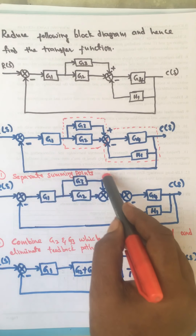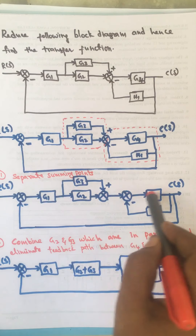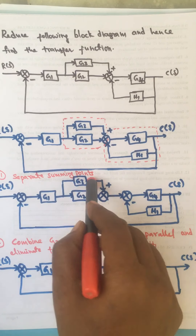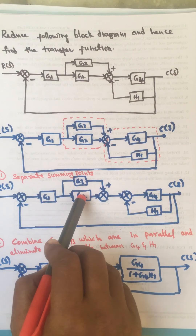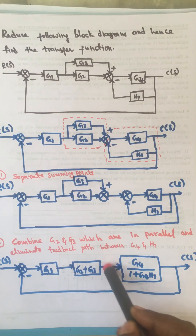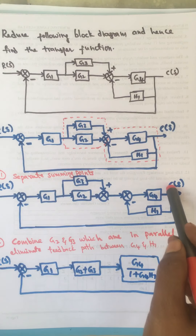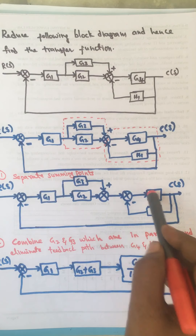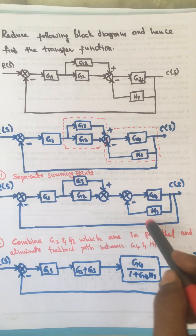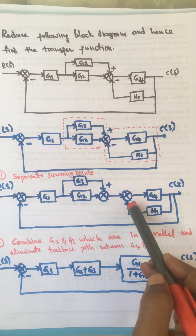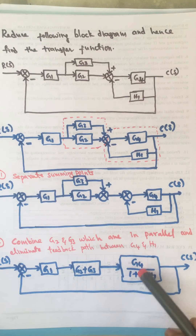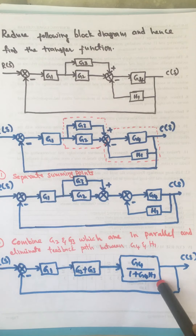First we eliminate the two blocks which are in parallel and remove this feedback path. If we combine the two blocks in parallel, we get a gain of G2 plus G3. Now if we eliminate this feedback path, the gain we get is the forward path gain G4 divided by 1 plus G4·H1.